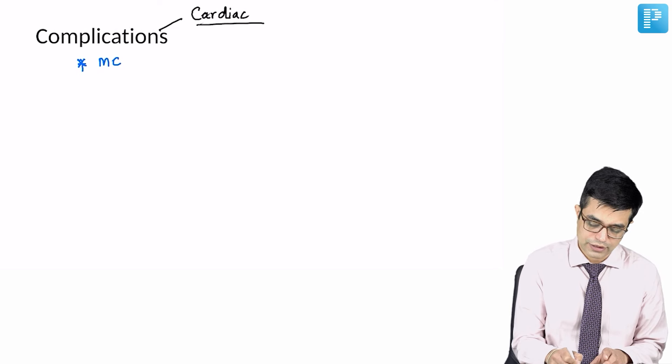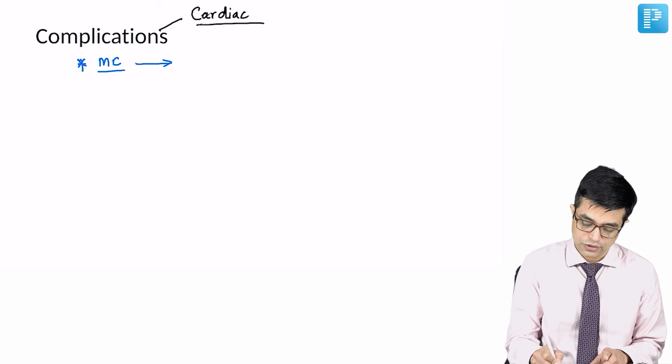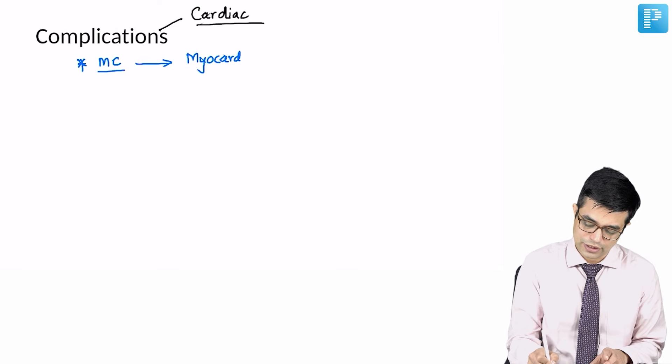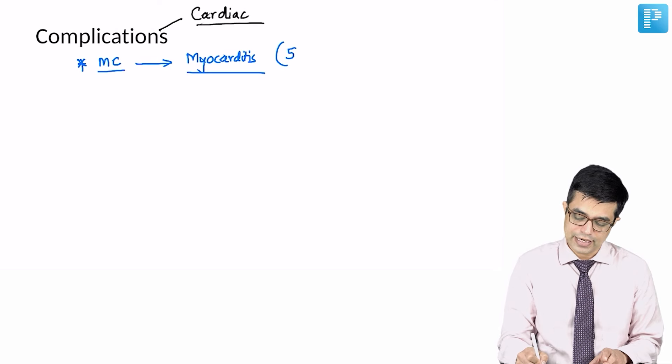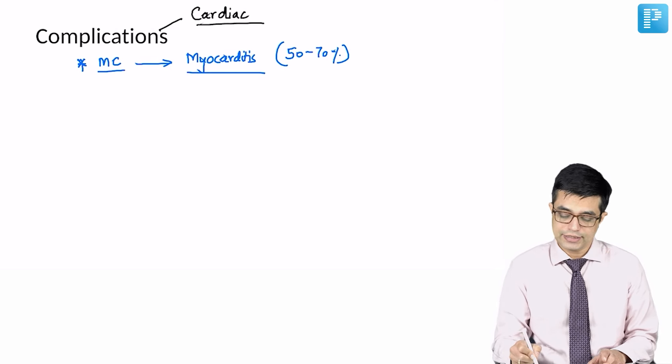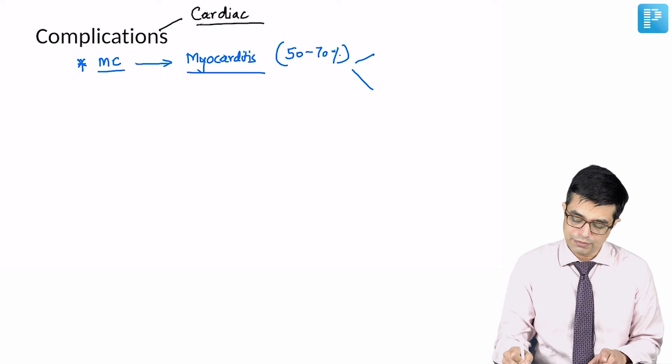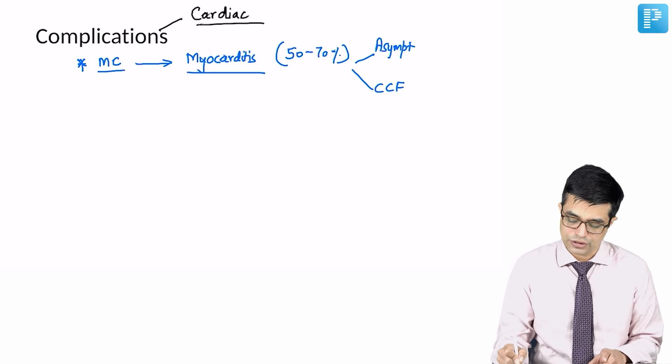The most common cardiac complication is myocarditis. Yes, it is not cardiac aneurysm, it is myocarditis. Myocarditis is seen in as many as 50 to 70 percent patients of Kawasaki disease. Myocarditis can either be asymptomatic or it may present with CCF-like features.